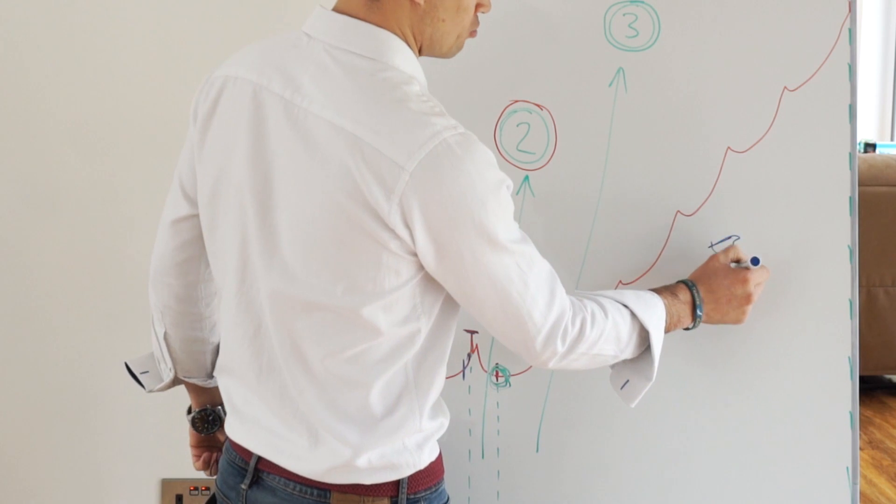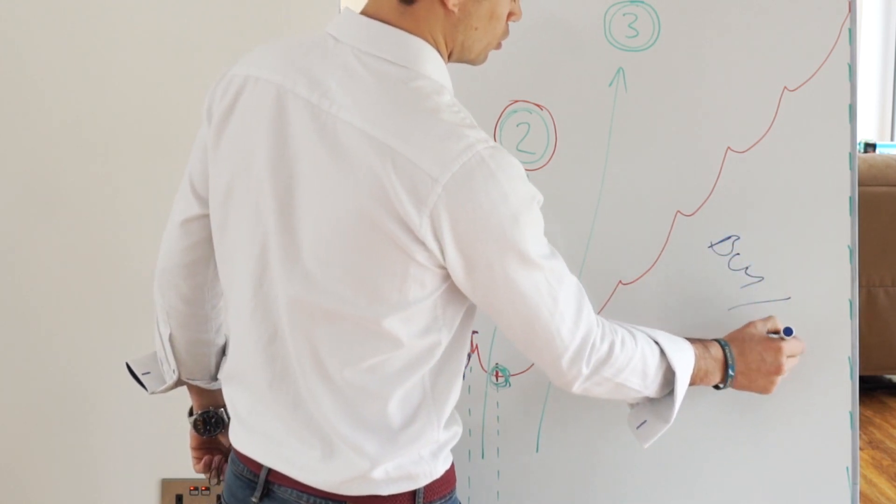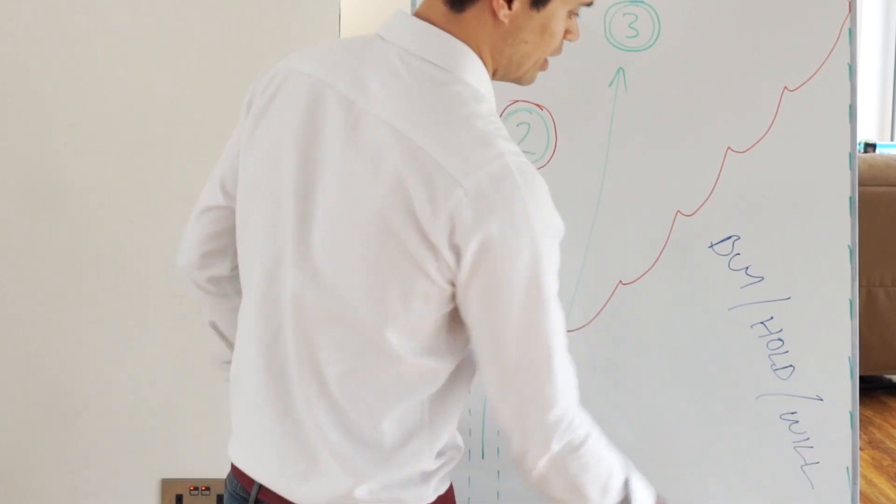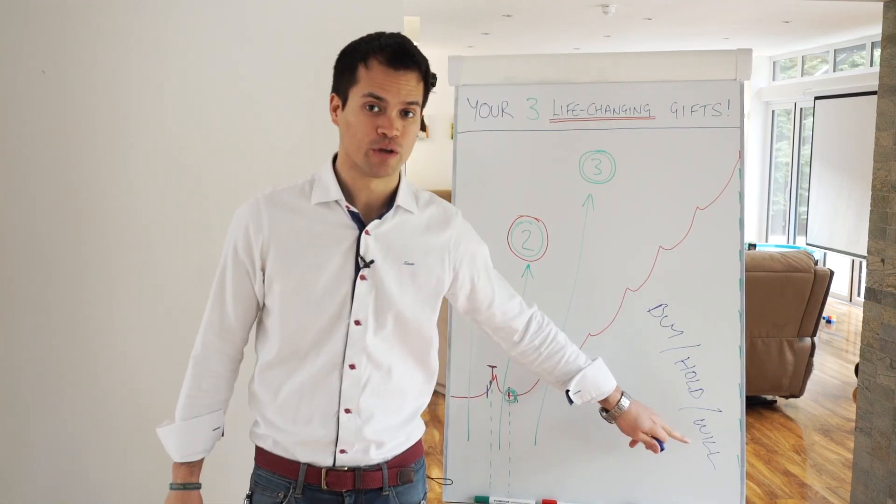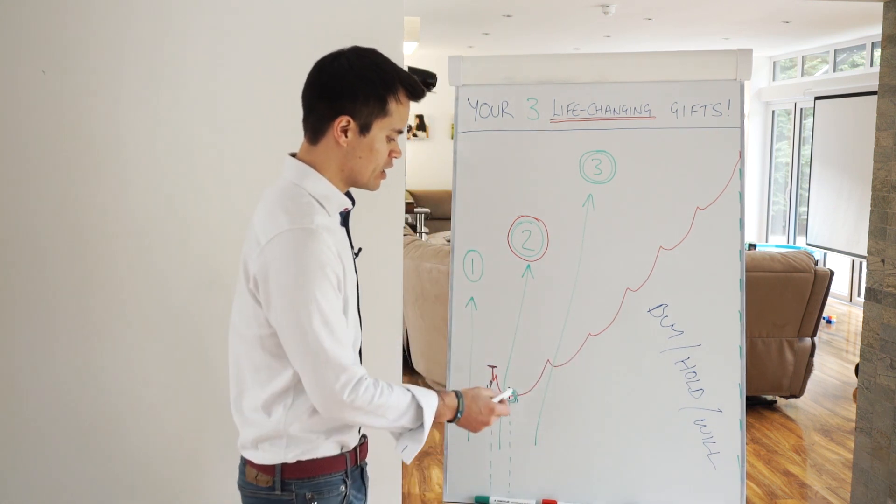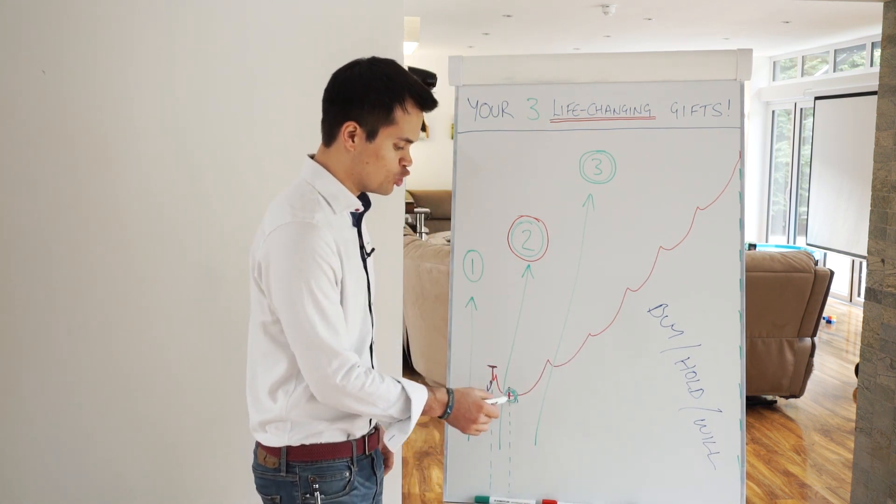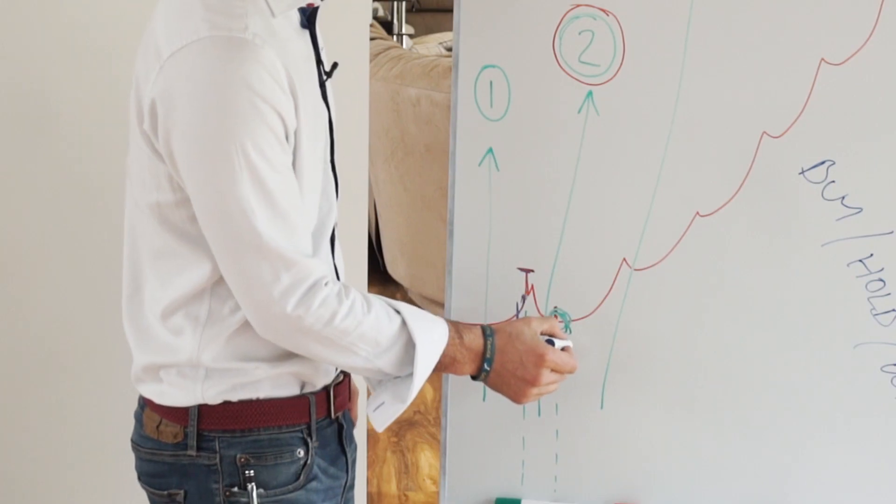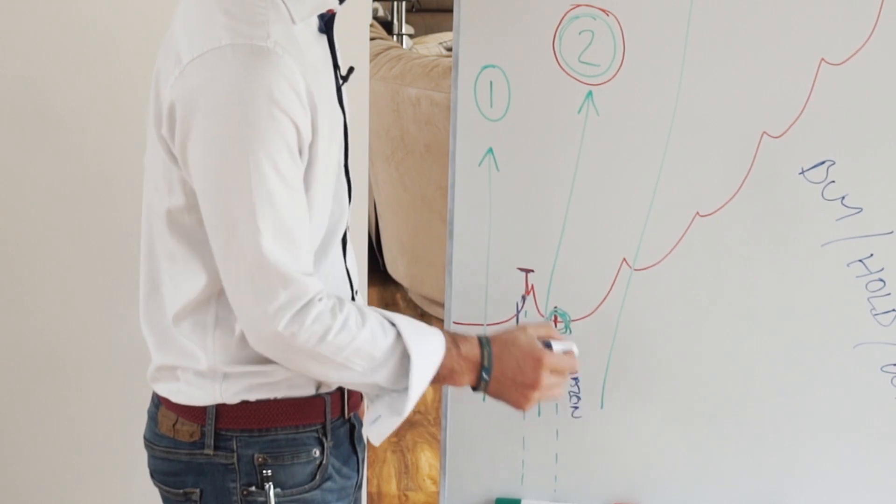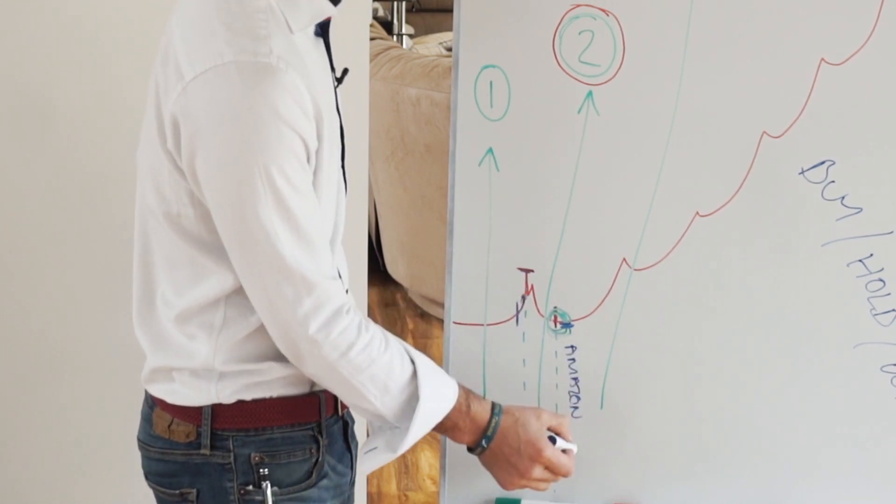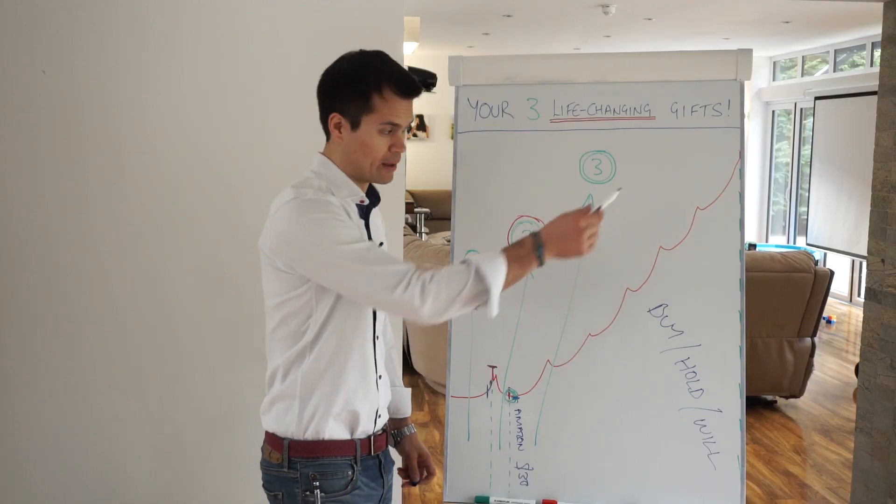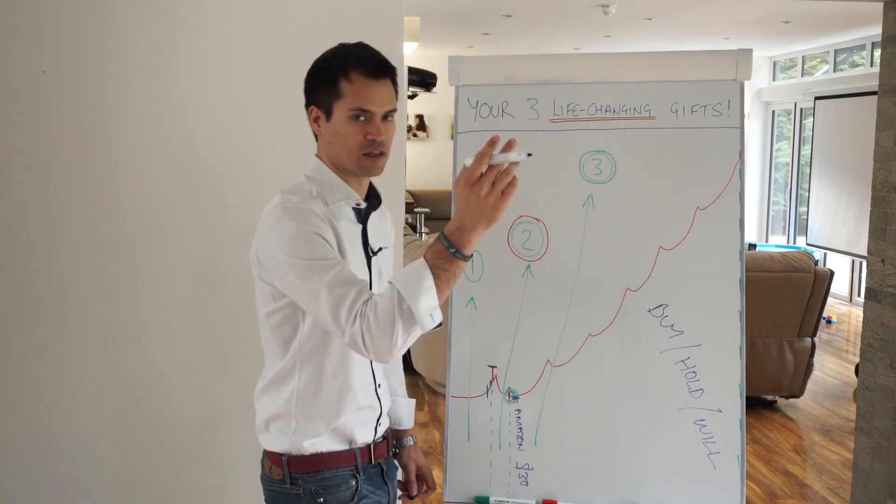Buy and hold—you're never going to sell it. You're going to be putting this in your will for your future generations. Just like you could buy Amazon down here in 2002 for about thirty dollars.